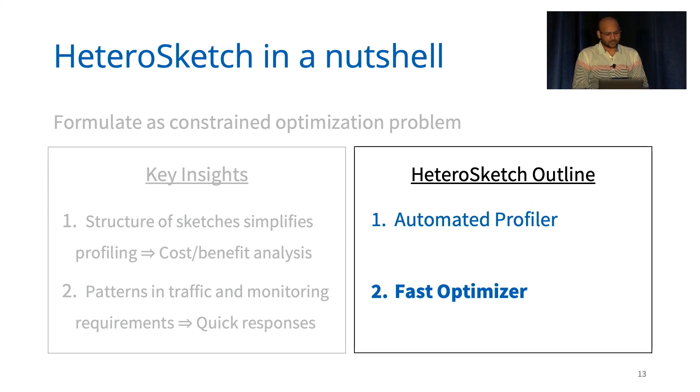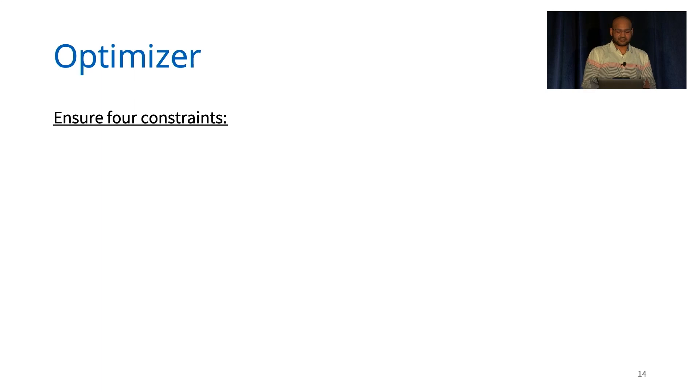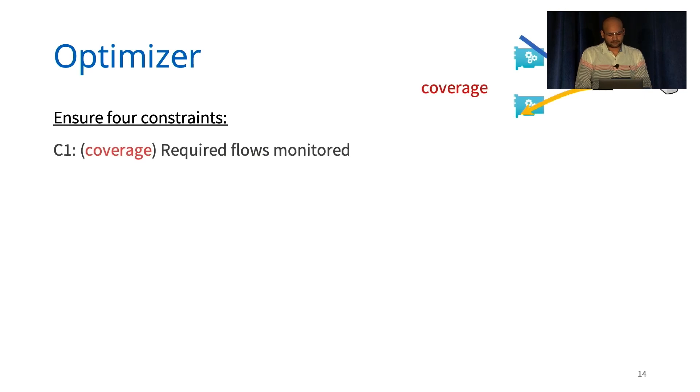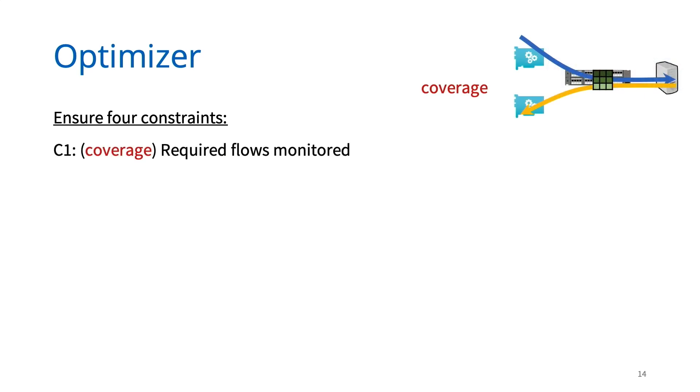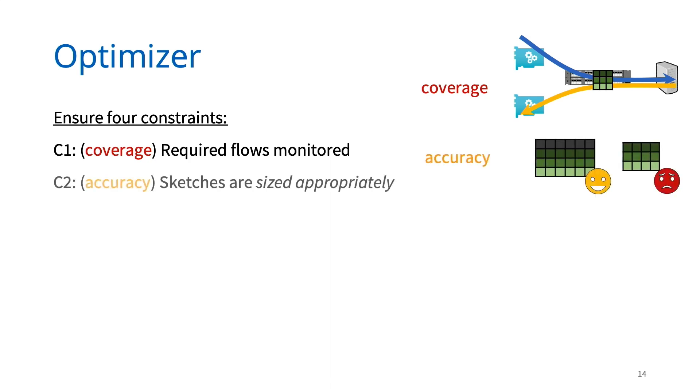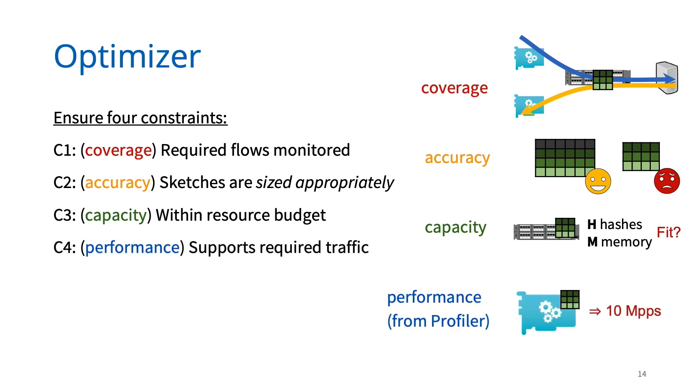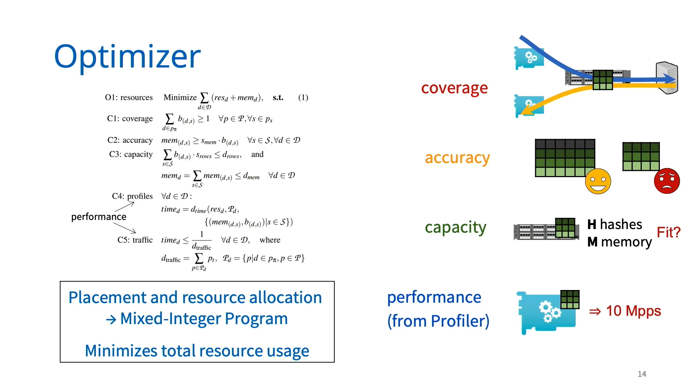Let's talk about our optimizer. The optimizer conducts sketch placement and resource allocation, and it needs to ensure four different types of constraints while doing so. First, we want to ensure that we are deploying sketches such that we are able to cover and monitor all the traffic. We want to ensure that our sketches are configured so that they meet the accuracy requirements. Further, they should fit within the capacity constraints of different devices. And lastly, using the profiler, we ensure that any sketching that we deploy on our device does not hamper the forwarding of existing traffic.